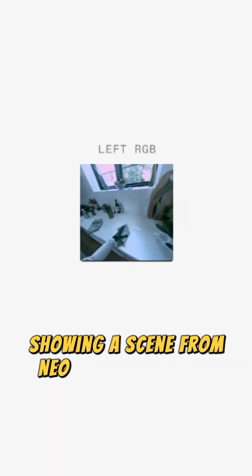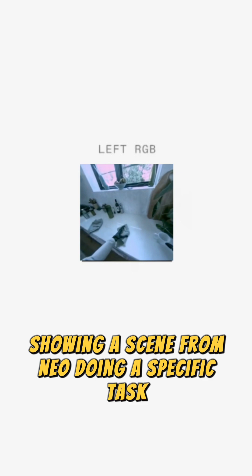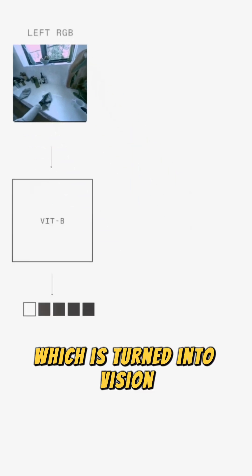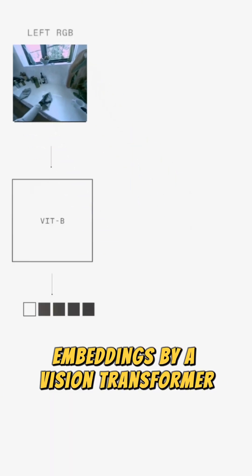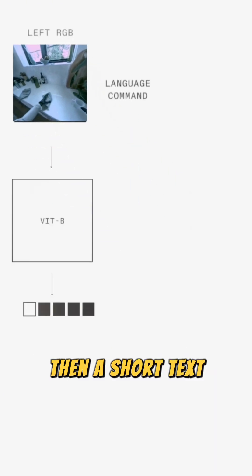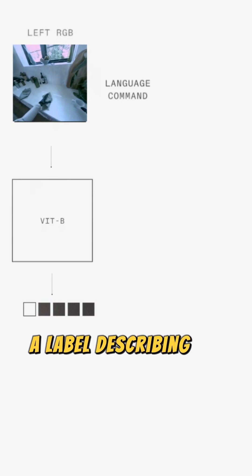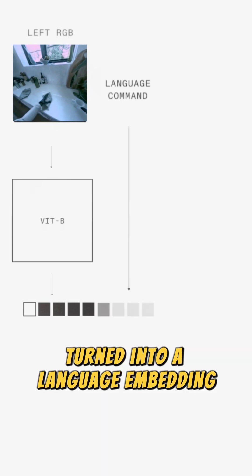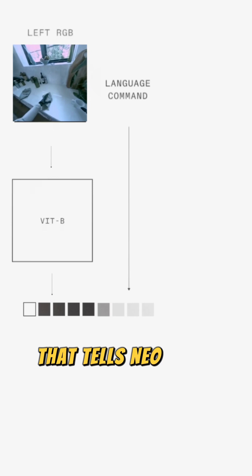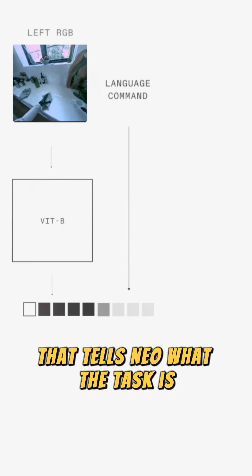Here we have the image received from Neo's camera showing a scene of Neo doing a specific task, which is turned into vision embeddings by a vision transformer. Then a short text label describing the goal — like cleaning the counter — is turned into a language embedding that tells Neo what the task is.